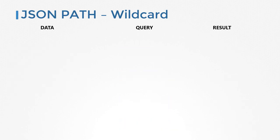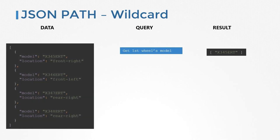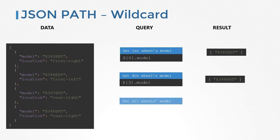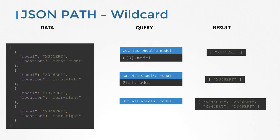Let us look at it in a list. Here we have a list of wheels. Each wheel is a dictionary that has a model and location — this is a list of dictionaries. We know that to get the model of the first wheel, we would use $[0].model, and similarly $[3].model for the fourth wheel. But what if we want the models of all the wheels? Instead of specifying a position, you could say star to mean all wheels. Within an array or list, using the wildcard star means all items in the list.